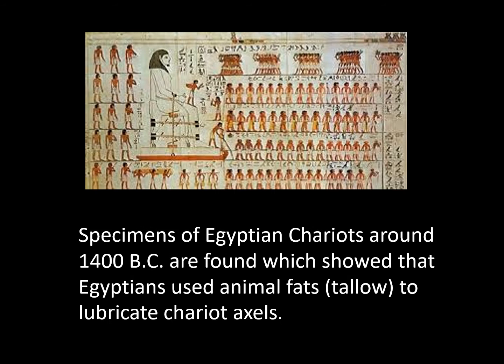Specimens of Egyptian chariots around 1,400 BC have been found, showing that Egyptians used animal fats to lubricate chariot axles.